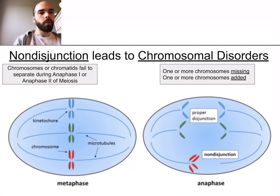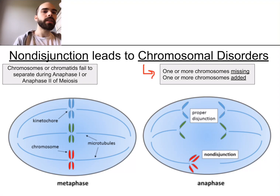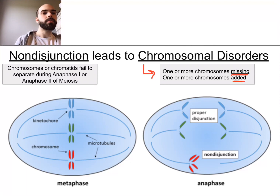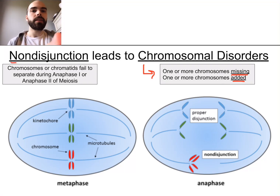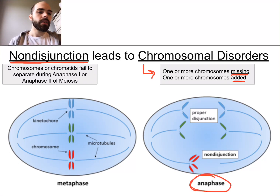So how do you get a chromosomal disorder? A chromosomal disorder is when you're either missing a chromosome or you have an extra chromosome. You get one through an event during anaphase called non-disjunction.